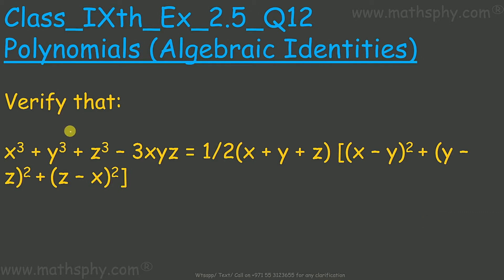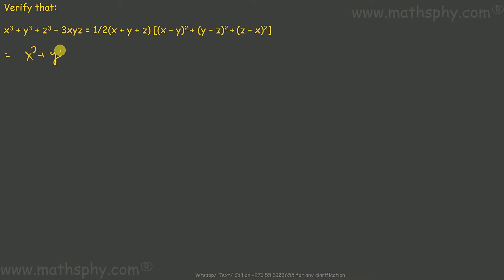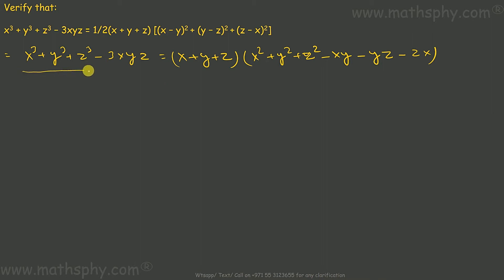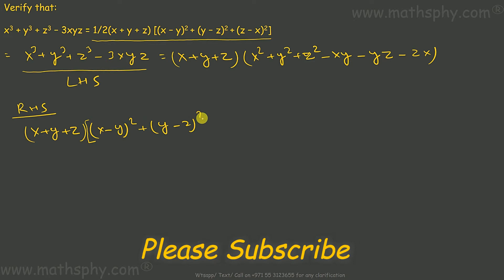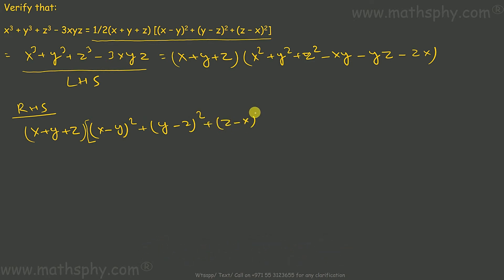This problem says verify that x cubed plus y cubed plus z cubed minus 3xyz is equal to this. The right hand side is x plus y plus z, into x minus y whole square plus y minus z whole square plus z minus x whole square, all over 2.